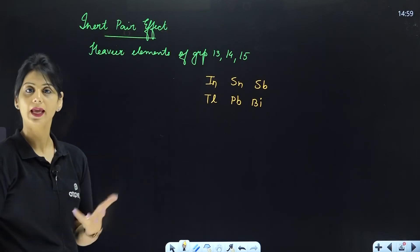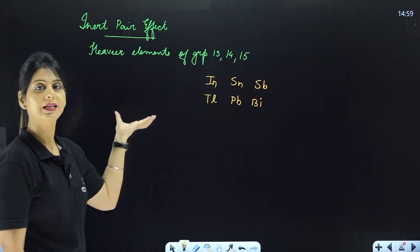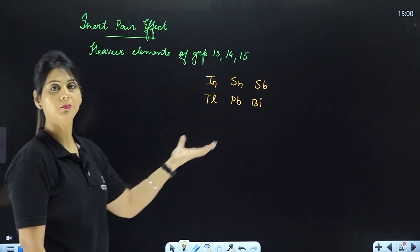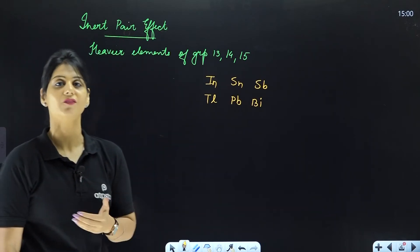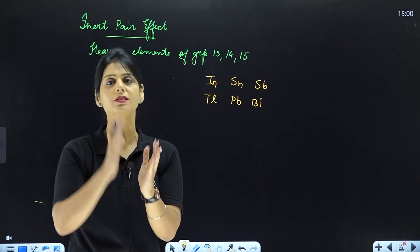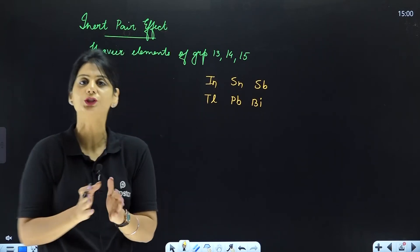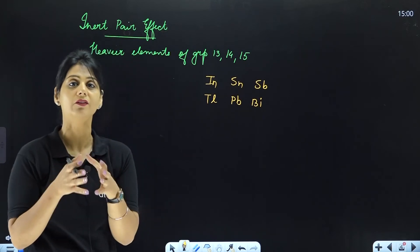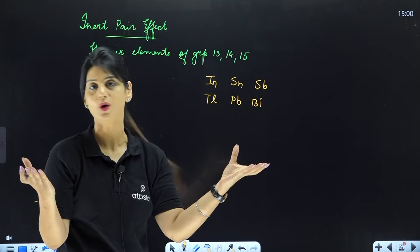What is this concept? For these heavier elements, the d-block and f-block orbitals are filled. This means there are d-electrons and f-electrons in the atom. Now, d- and f-electrons have a very poor screening effect, meaning these electrons don't effectively screen the nuclear charge from the valence electrons.